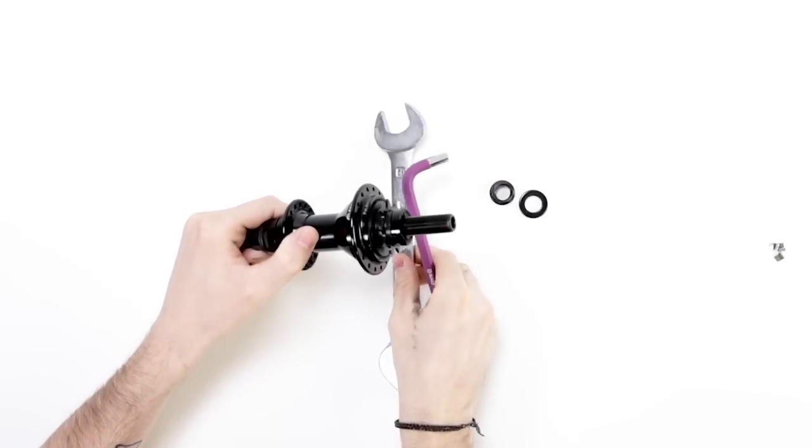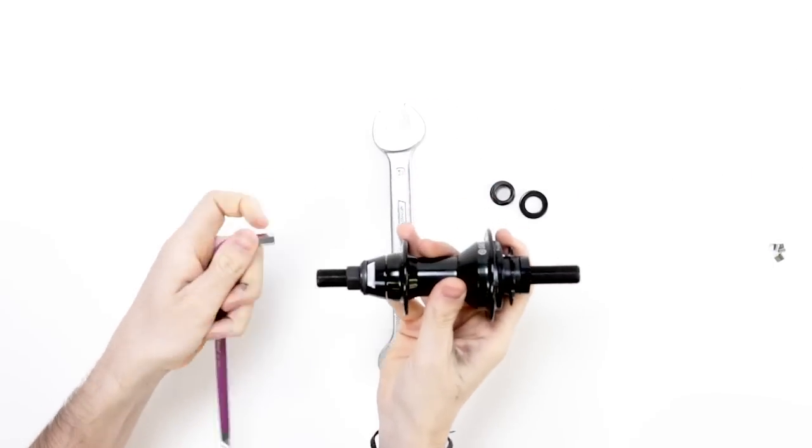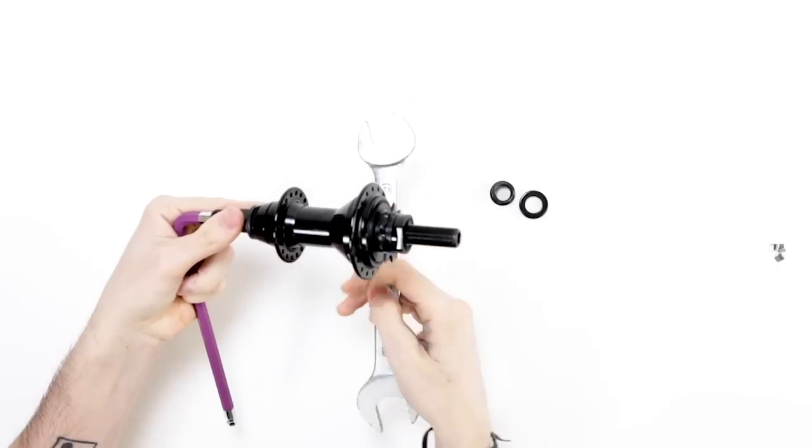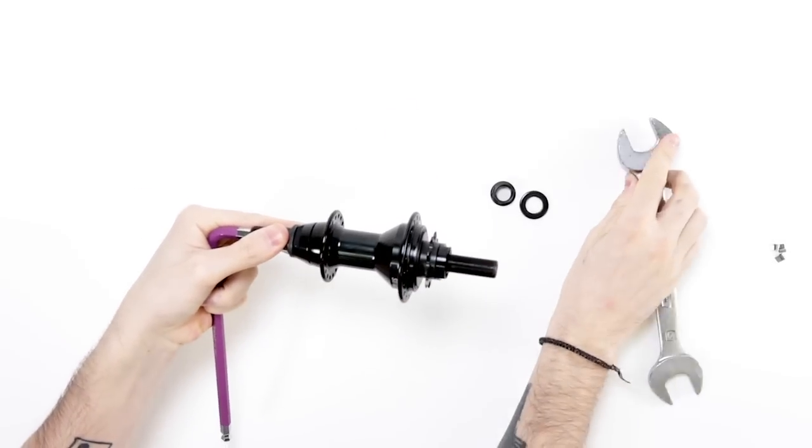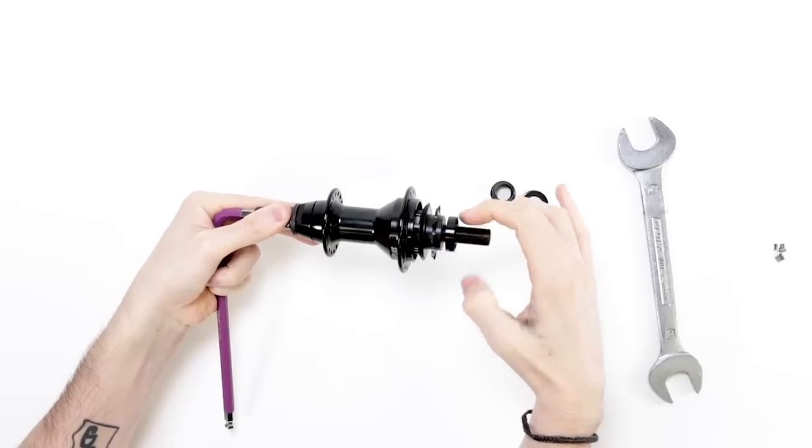You're then going to want to take an 8mm allen key, put it in the end of the axle and use it as extra leverage with a 23mm cone wrench to get the drive side cone nut off. This cone nut might be on pretty tight.